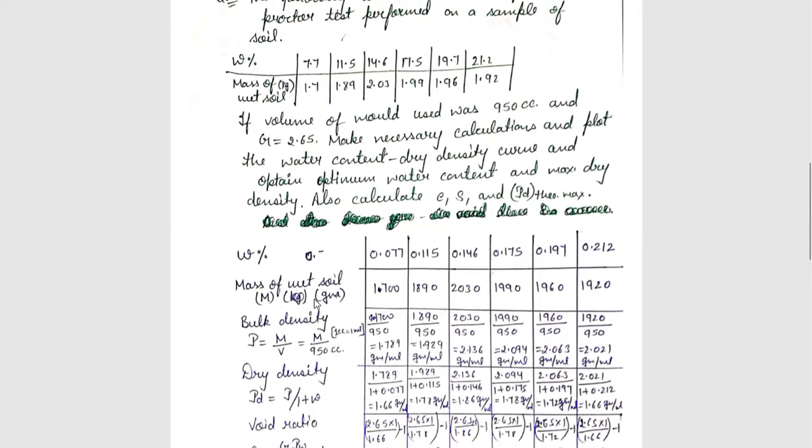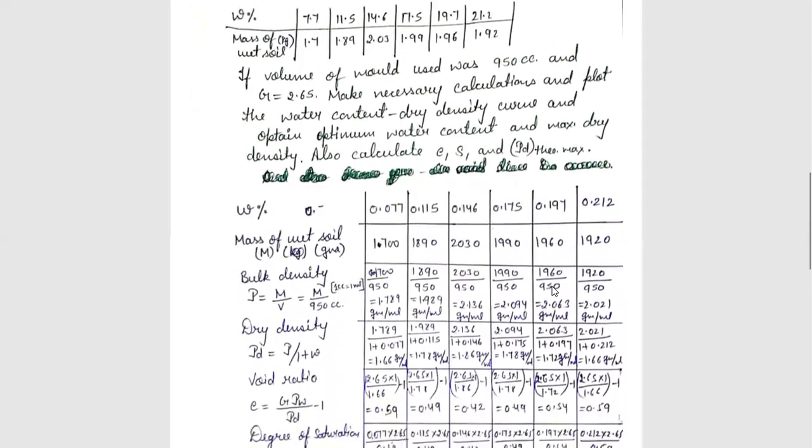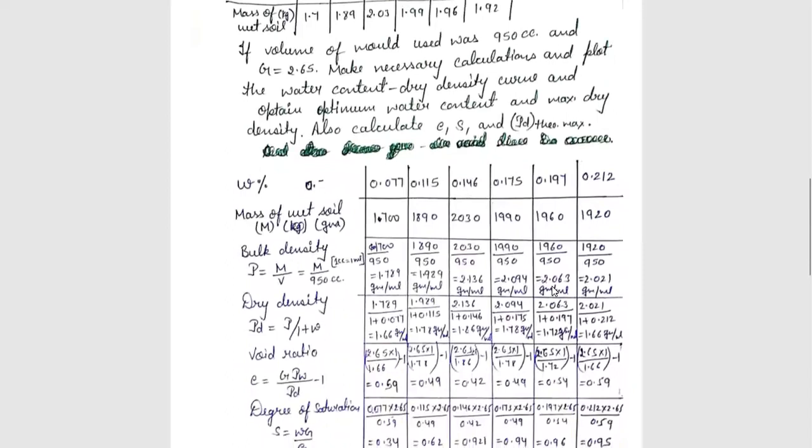We have given the mass of wet soil M, we have given it in kilogram, we change it in gram. As we change in gram, we will multiply the mass of wet soil here. What do I need to do? First, I will take bulk density. Bulk density is rho equals to M upon V.